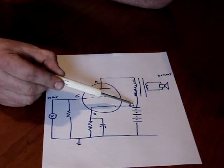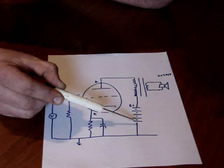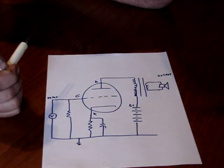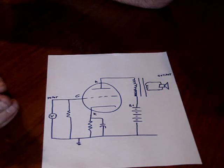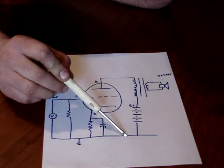This would be the B-plus supply. It could be a battery, such as this, or a rectified half-wave rectifier circuit, like I showed in an earlier drawing. And this is ground.